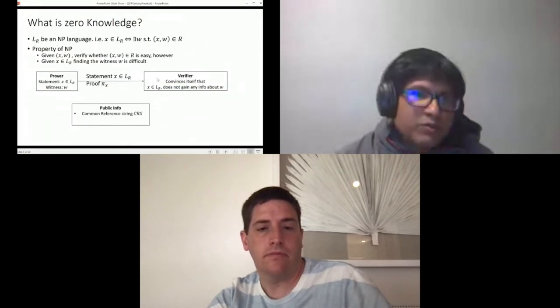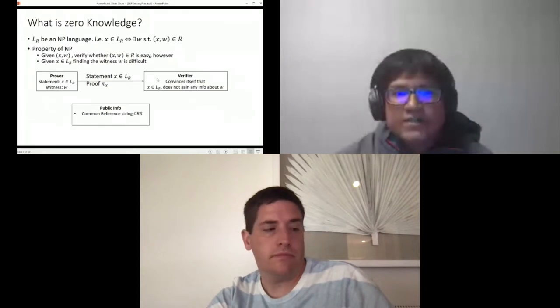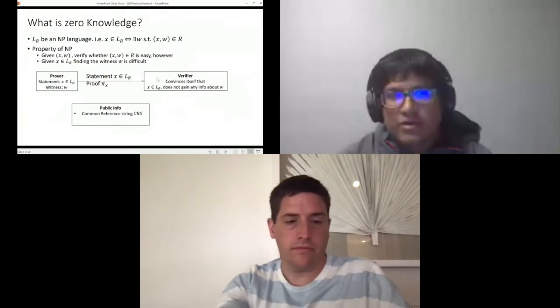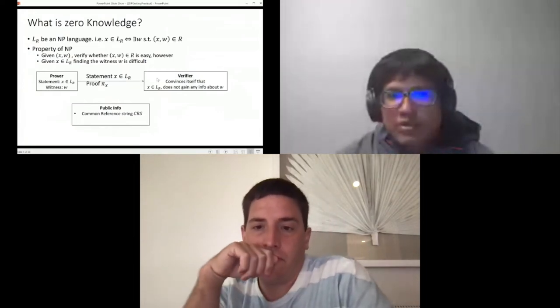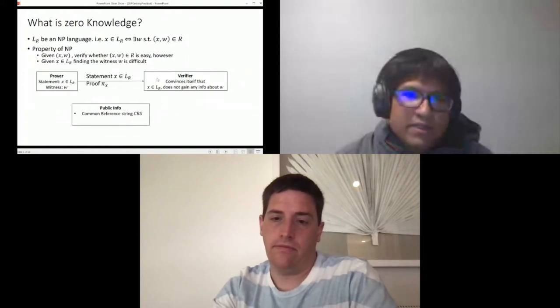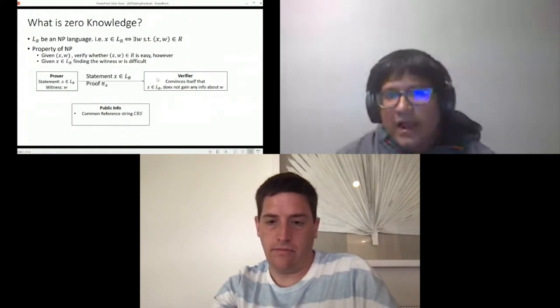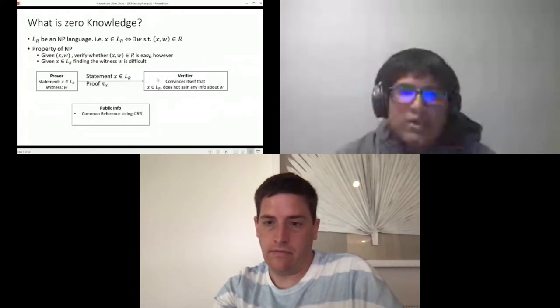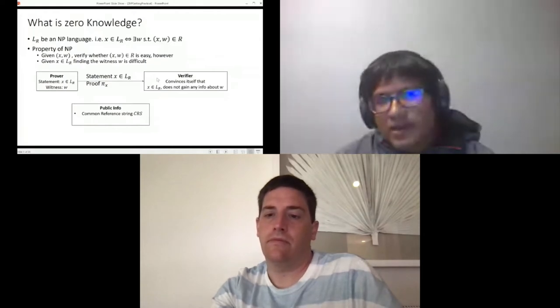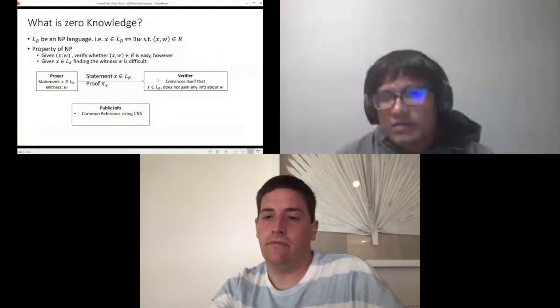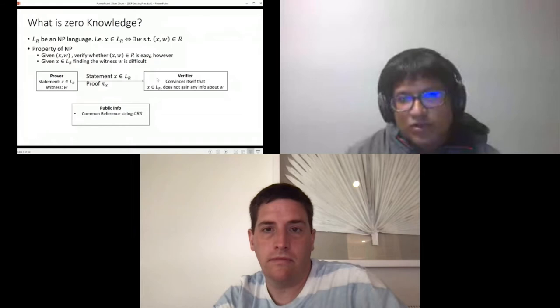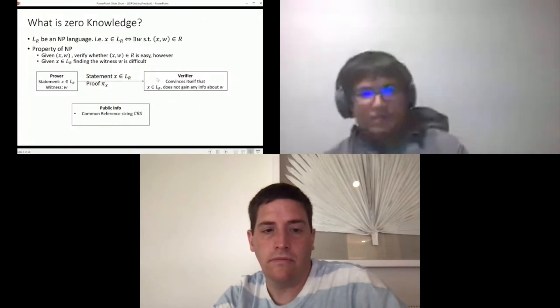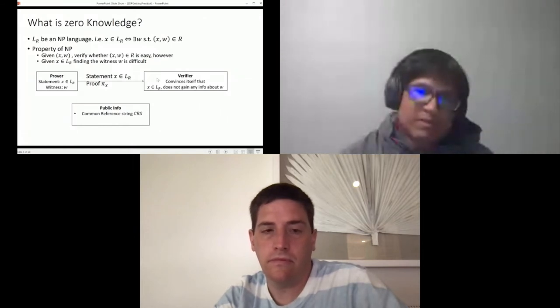In this case, the prover wants to prove that the statement x actually belongs to the language and he or she knows the witness w. Using this witness w they can create the proof π_x and using the proof π_x the verifier can convince itself that x actually belongs to the language L, but the zero-knowledge property guarantees that π doesn't leak any information about w. To implement these zero-knowledge protocols we in many cases also have a common reference string (CRS) which is generated by some trusted entity.